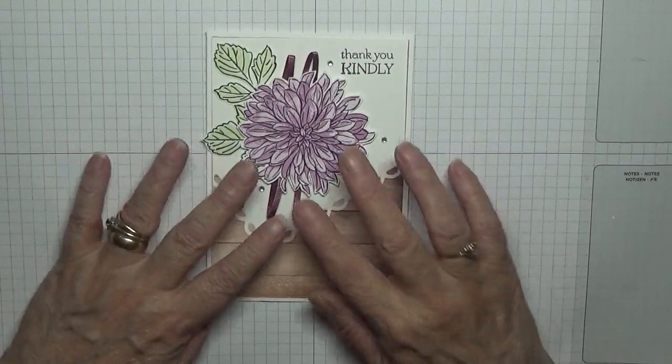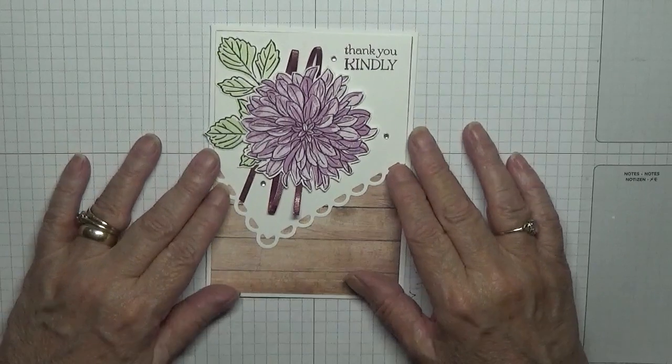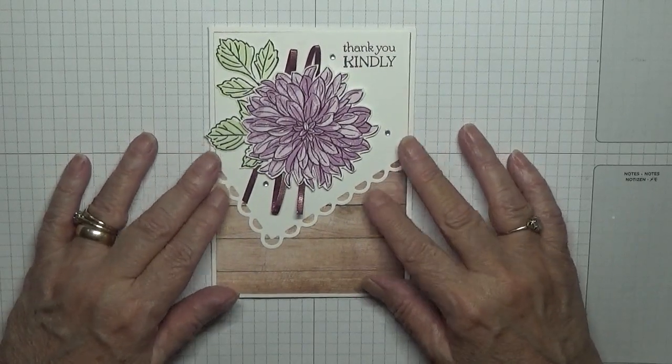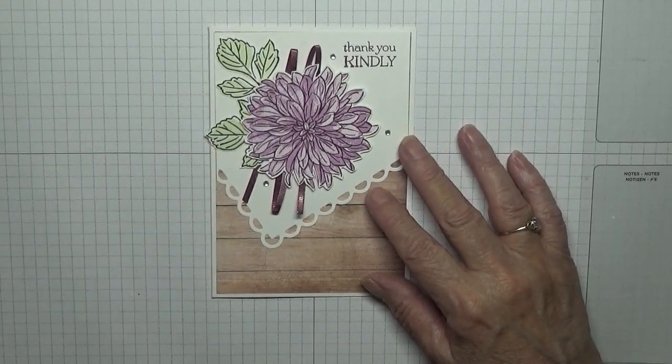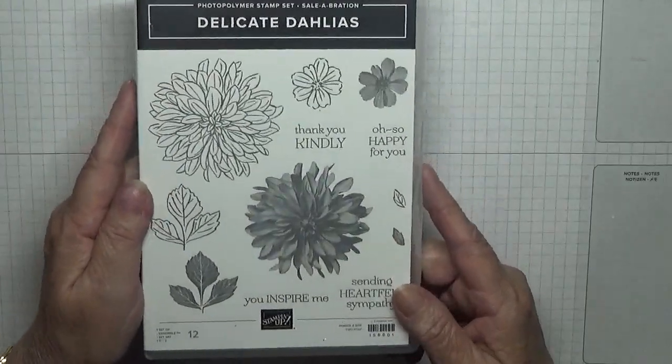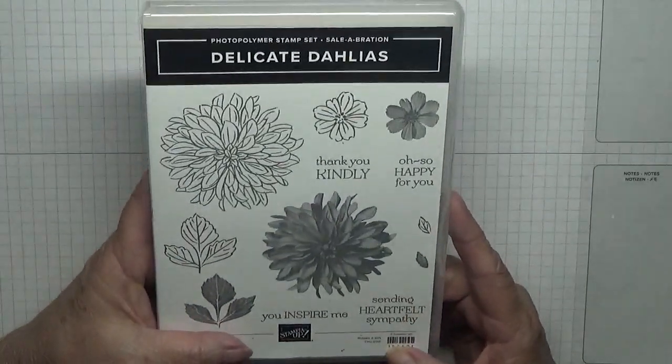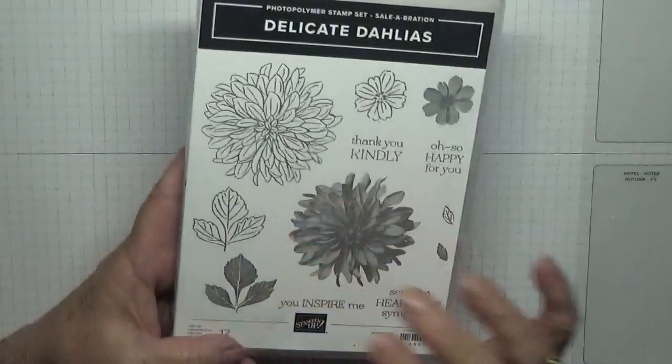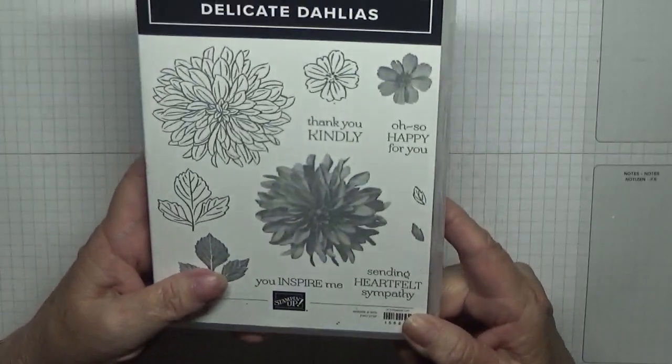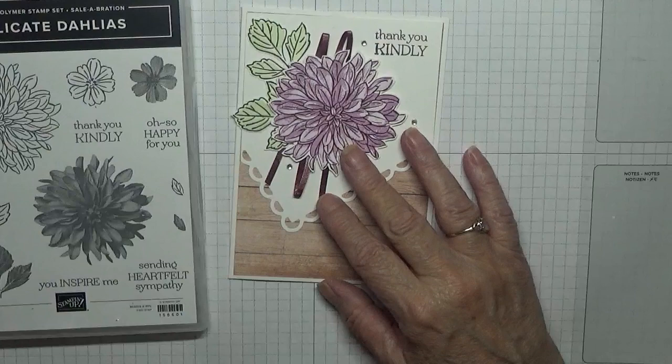Hello Georgia B back again. Today I'd like to show how I made this card using the stamp set Delicate Dahlias. I used both these images and both these images. The cards I've got right, I've already done the leaves because I did four when I made this one and I only used two.